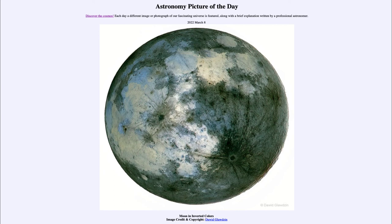We can still see the remnants of those older features, along with the few newer craters that have landed on top of them. However, overall the moon still looks much as it did billions of years ago. If you could go back a billion years in time and look at the moon, it would look roughly the same — perhaps a few new craters — but the overall structure hasn't changed, whereas the Earth looks quite different.